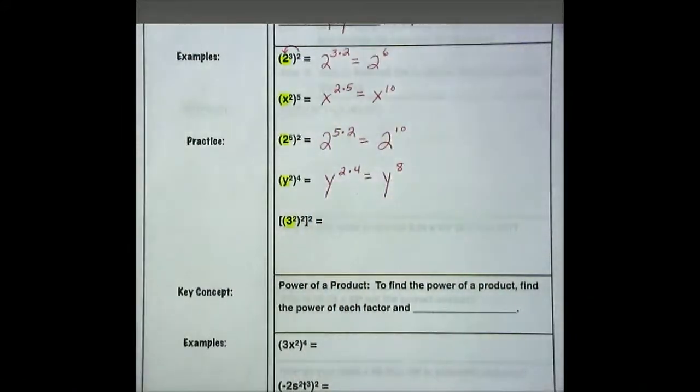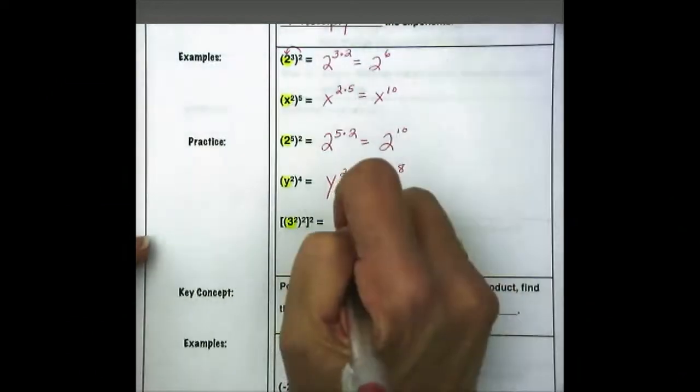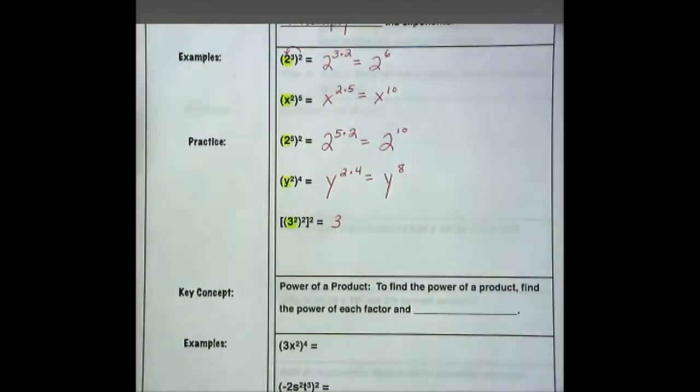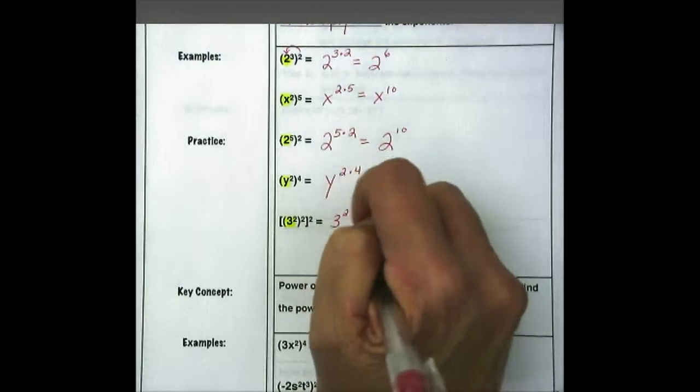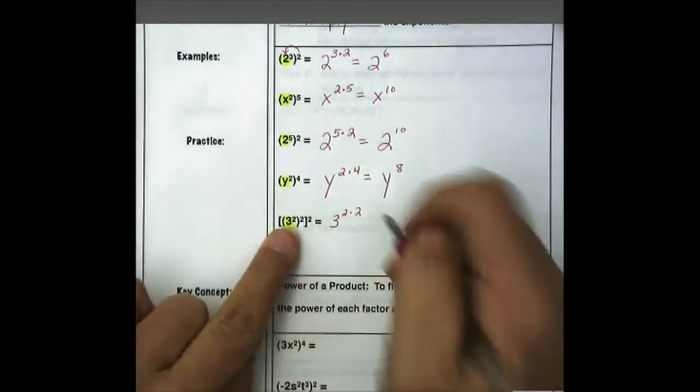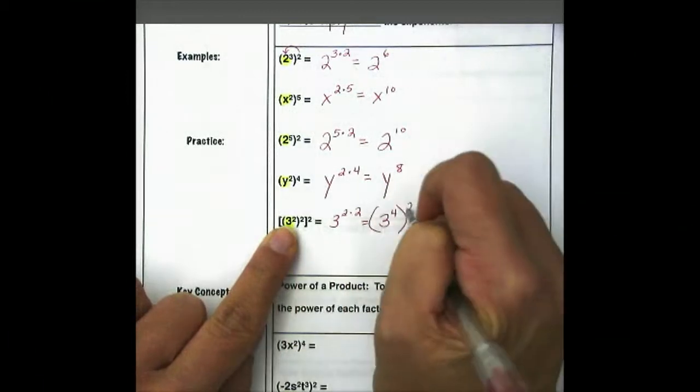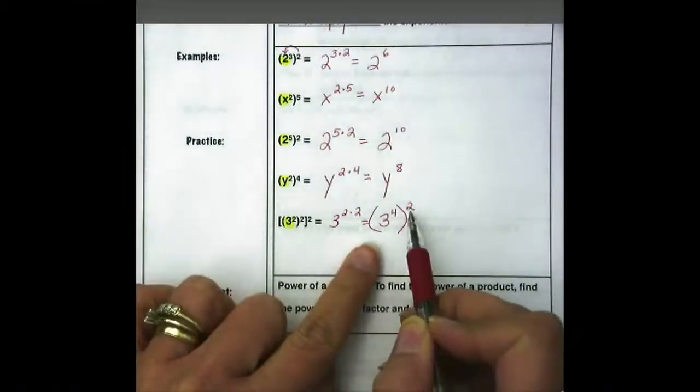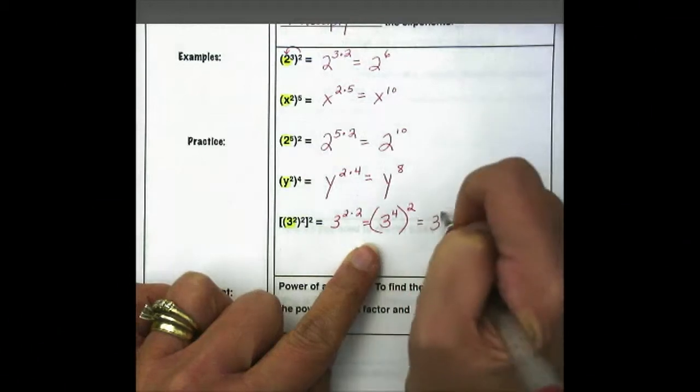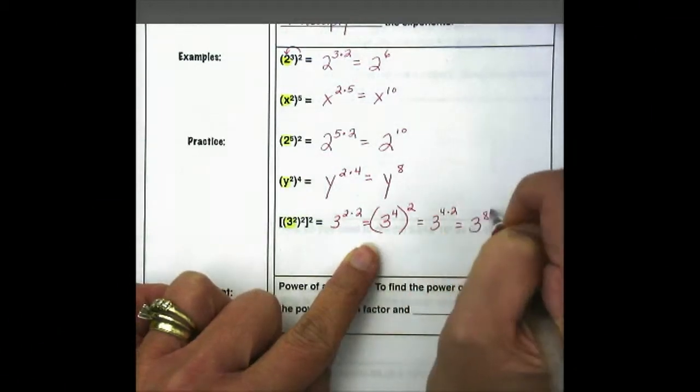The next one is a little bit harder. Hopefully you were able to get an answer down for this one. So our base stays the same. We have 3 to the 2nd raised to the 2nd power. So 3 to the 2 times 2 equals 3 to the 4th. And it's raised to the 2nd. 3 to the 4th is raised to the 2nd power. So 3 to the 4 times 2 or 3 to the 8th power.